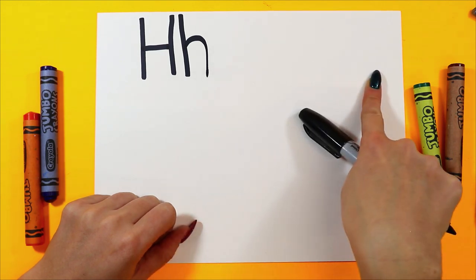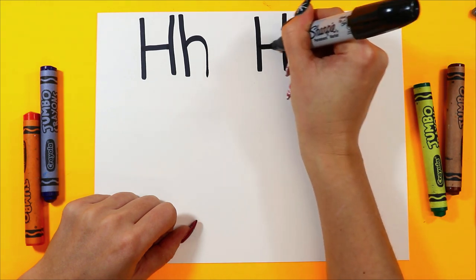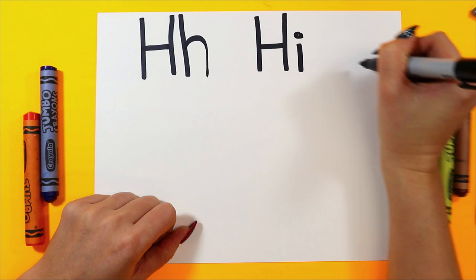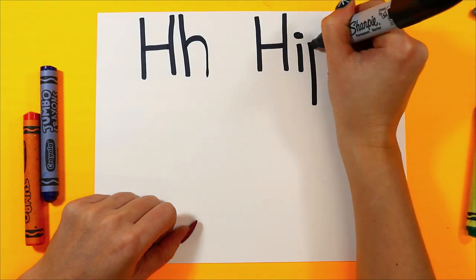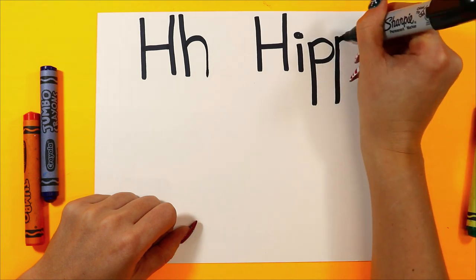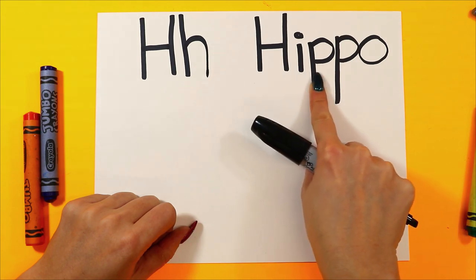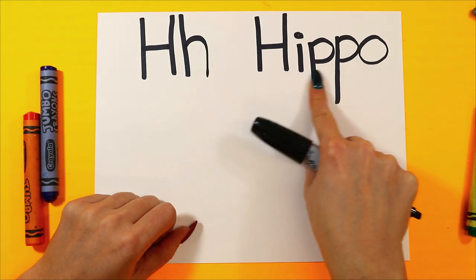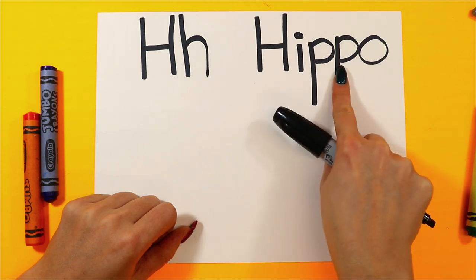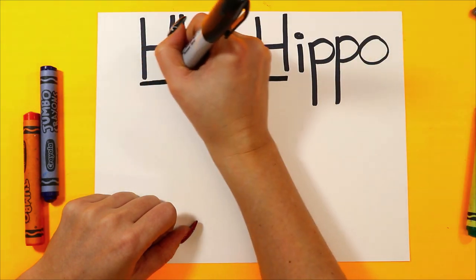Let's write the word hippo: H-I-P-P-O. Hippo. Hip-po. Hippo. Hippo starts with the letter H. Let's draw a hippo!